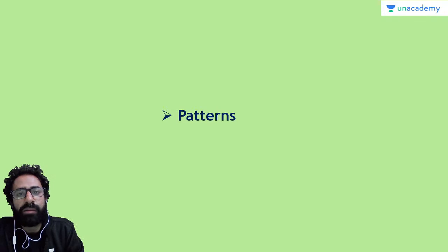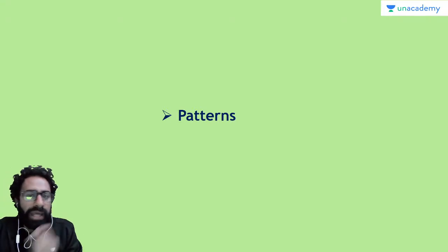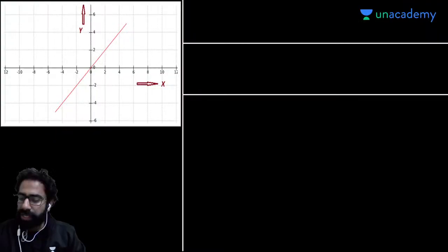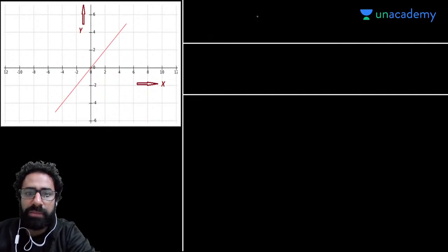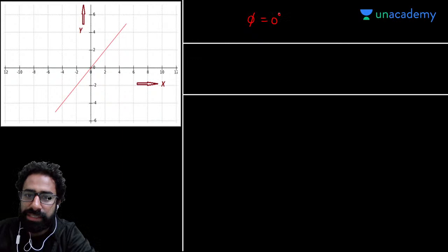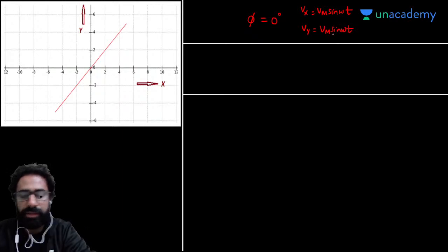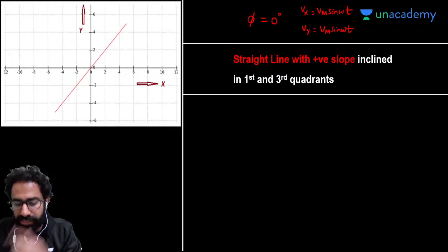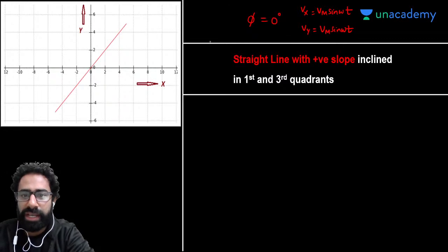Today we come directly to the point. If we apply two sinusoidal inputs in YX mode on the CRO and judge the phase difference with same frequency and same amplitude, we should be able to determine phase difference from the pattern. The first case: if phase difference is 0 degrees — meaning Vx = Vm·sin(ωt) and Vy = Vm·sin(ωt) — you see a straight line on the CRO screen with positive slope inclined in the first and third quadrants.